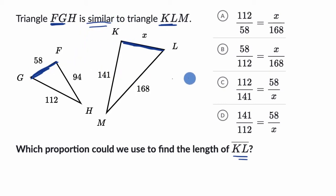So now let's think about what these are, what all of these are doing over here. So this first choice, it's comparing X to 168. So it looks like it's looking at the ratio of the length of this side of KL to LM.